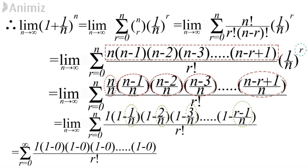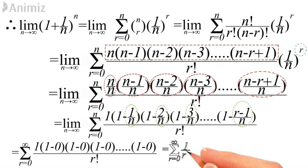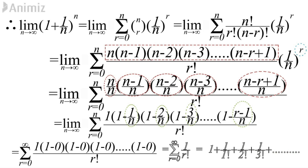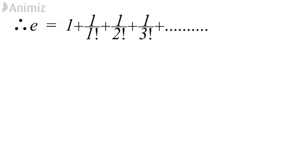So in the numerator we get 1·1·1·...·1 = 1, giving us Σ (1/r!) with r from 0 to infinity. Breaking the sum: 1 + 1/1! + 1/2! + 1/3! + ... up to infinite terms. So E equals 1 + 1/1! + 1/2! + 1/3! + ... up to infinite terms.